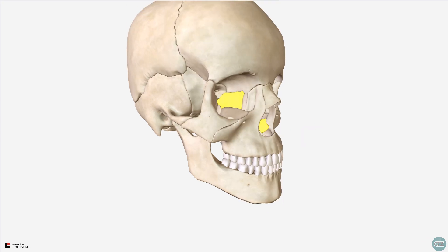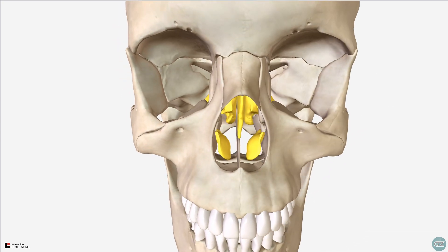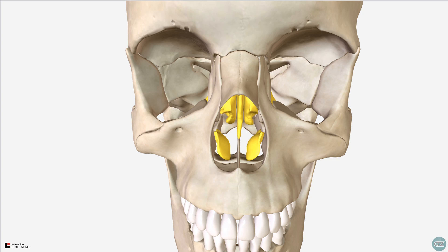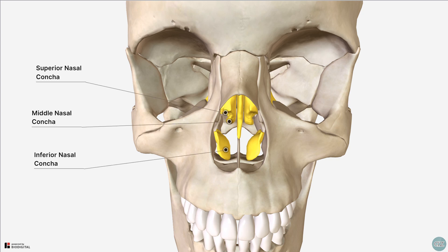Returning to the anterior view, these curved bones are known as the nasal conchi. There are three paired nasal conchi within the nose, but it is the inferior nasal conchi that are considered as part of the facial skeleton. The middle and superior conchi arise from the ethmoid bone, which forms part of the neurocranium.